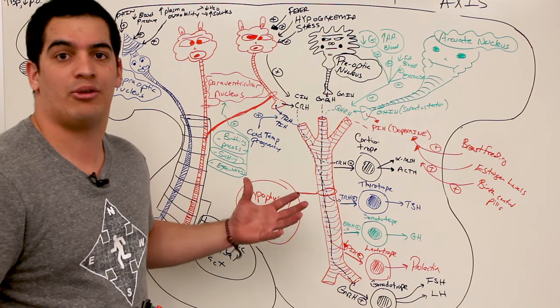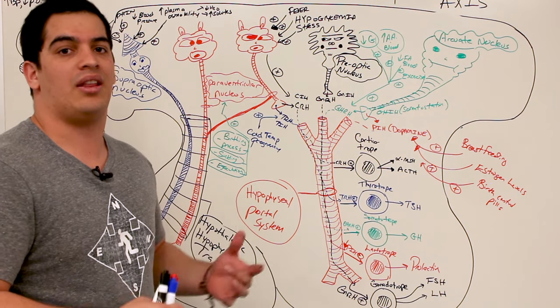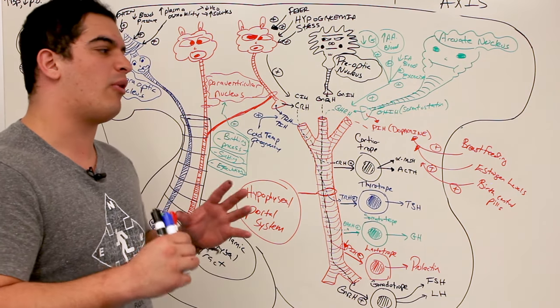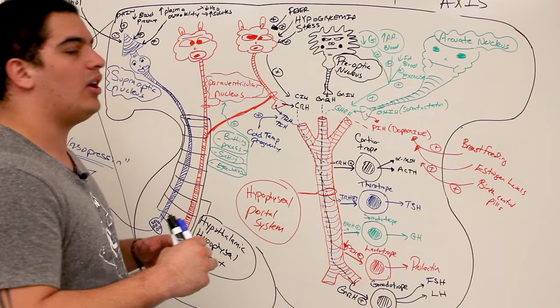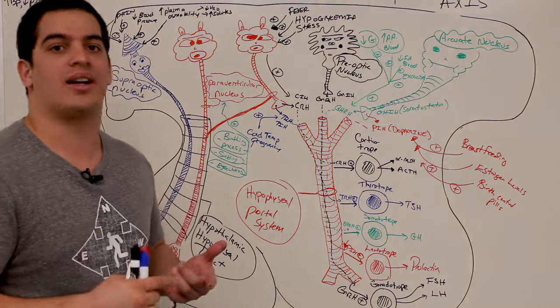In this video we talked a lot about the hypothalamic and pituitary axis, discussing the posterior and anterior pituitary. The next video will focus specifically on the effects of oxytocin.